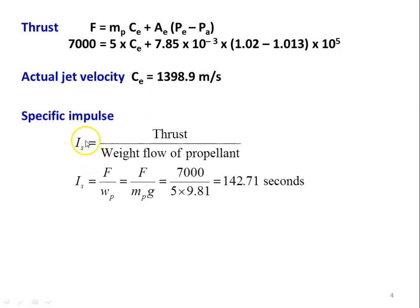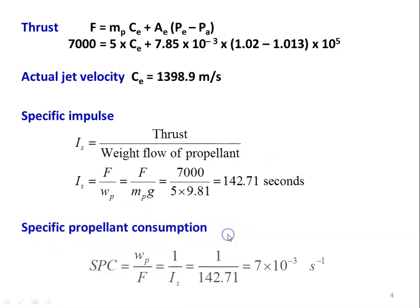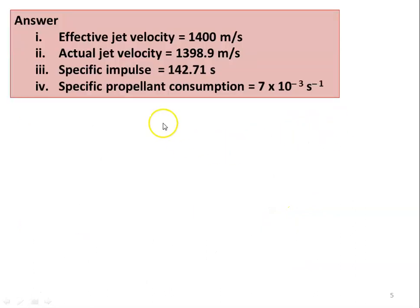The specific impulse Is = thrust divided by weight flow rate of propellant = F / (MP × g) = 7000 / (5 × 9.81) = 142.71 seconds. The specific propellant consumption Sp = Wp / F = 1 / Is = 1 / 142.7 = 7 × 10⁻³ s⁻¹. Summary of answers: effective jet velocity 1400 m/s, actual jet velocity 1398.9 m/s, specific impulse 142.71 s, specific propellant consumption 7 × 10⁻³ s⁻¹.